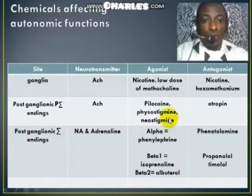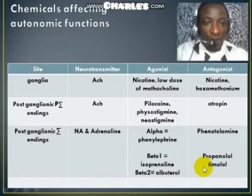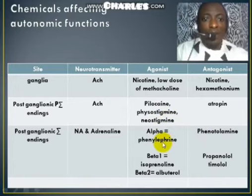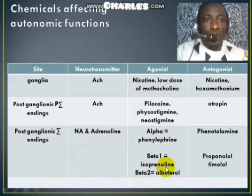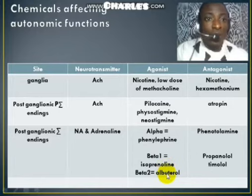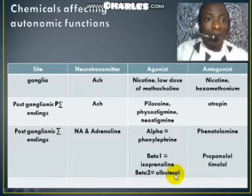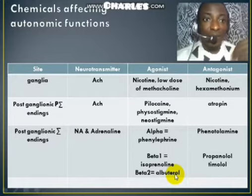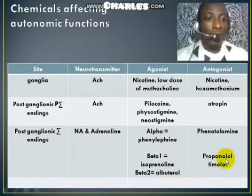These chemicals or drugs can be used to manage or treat some autonomic dysfunctions. For example, agonists such as phenylephrine and isoprenaline are used to manage conditions such as shock, hypotension, and bronchoconstriction. Albuterol is a drug that can be used to manage asthmatic patients because it causes bronchodilation, allowing more air to get into the lungs and body tissues.